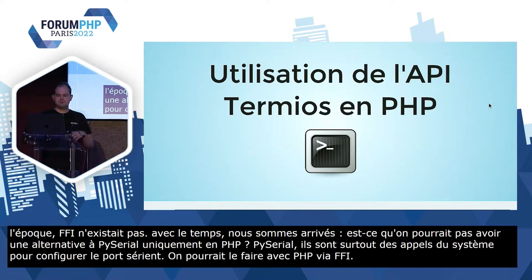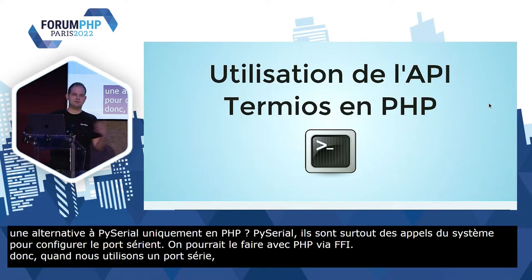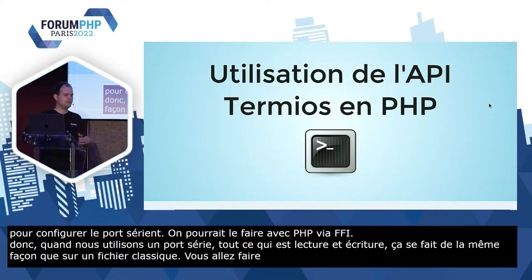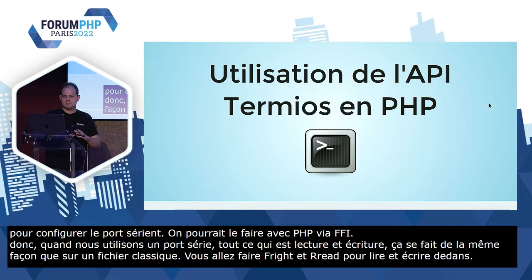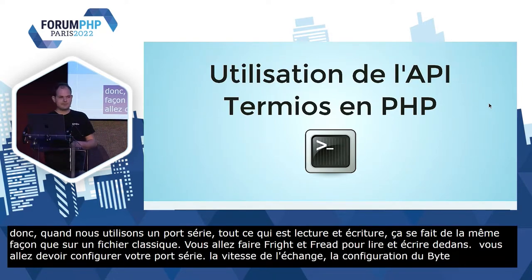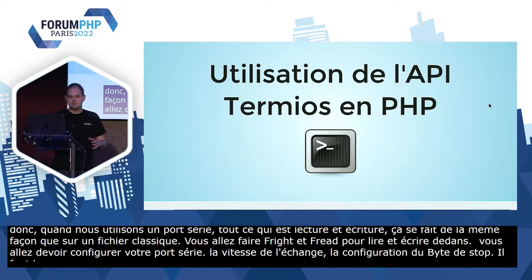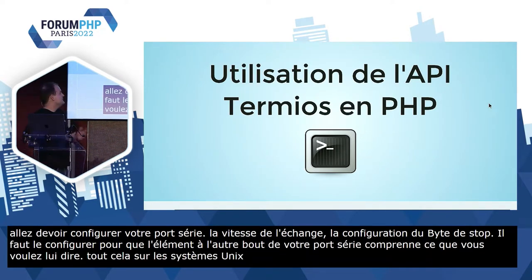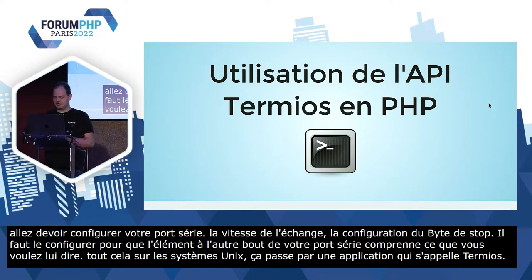Quand on utilise un port série, tout ce qui est lecture et écriture ça se fait de la même façon que sur un fichier classique : vous faites un fopen pour l'ouvrir, puis du fread et du fwrite pour lire et écrire dedans. Par contre, avant de faire de la lecture et de l'écriture, vous allez devoir configurer correctement votre port série — notamment la vitesse d'échange, la configuration du bit de stop — pour que l'élément à l'autre bout comprenne ce que vous essayez de lui dire. Sur les systèmes UNIX, ça passe par une API qui s'appelle Termios. L'idée de cette première partie, c'est de vous montrer comment on a fait un portage de cette API vers PHP pour pouvoir l'utiliser directement en PHP via FFI.